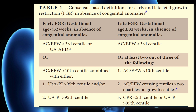Early FGR is defined at a gestational age of less than 32 weeks, in the absence of congenital anomalies, in which the abdominal circumference or estimated fetal weight is less than the 3rd centile, or the umbilical artery shows absent end-diastolic flow, or the abdominal circumference or estimated fetal weight is less than the 10th centile combined with either uterine artery pulsatility index criteria.